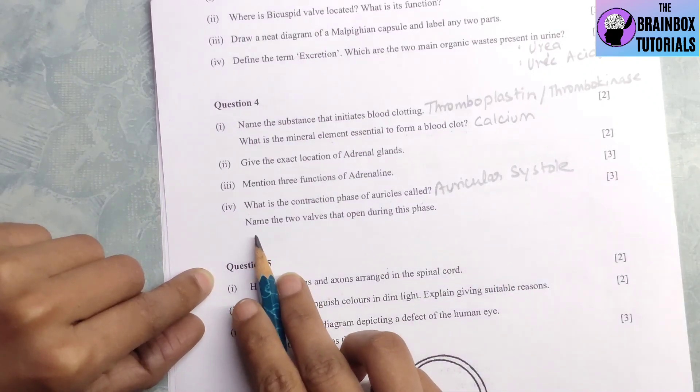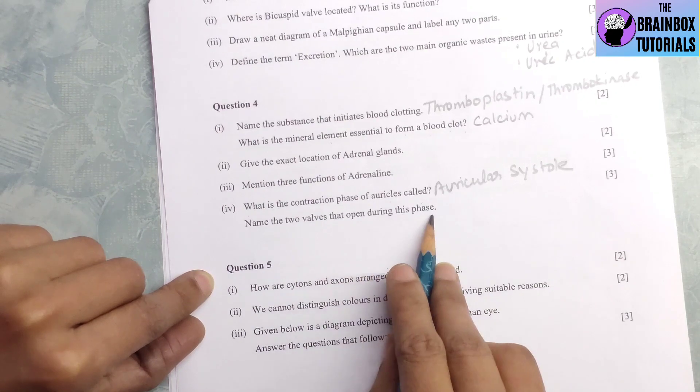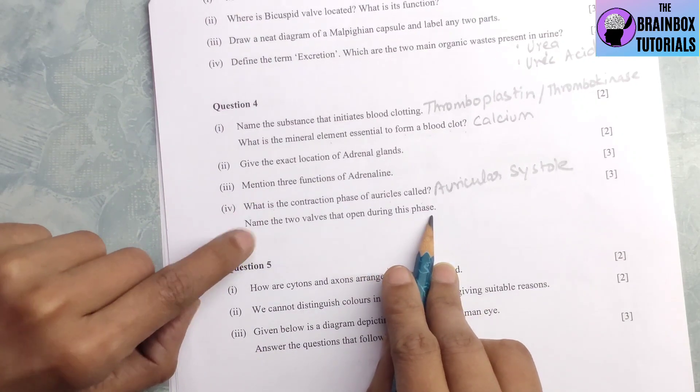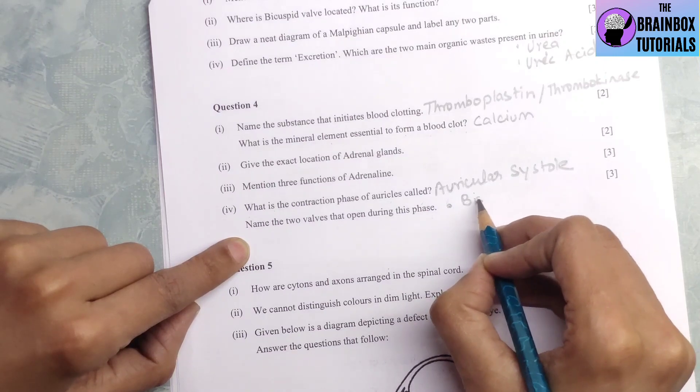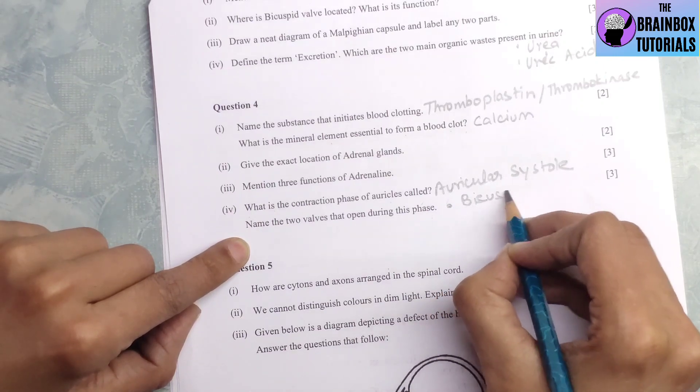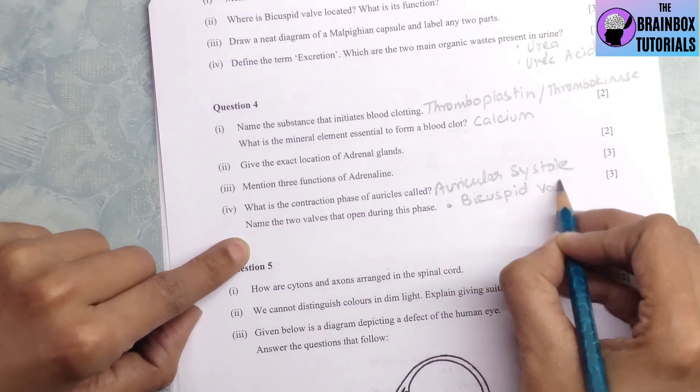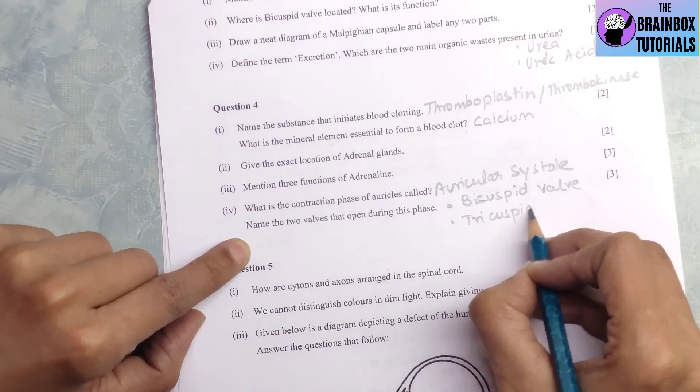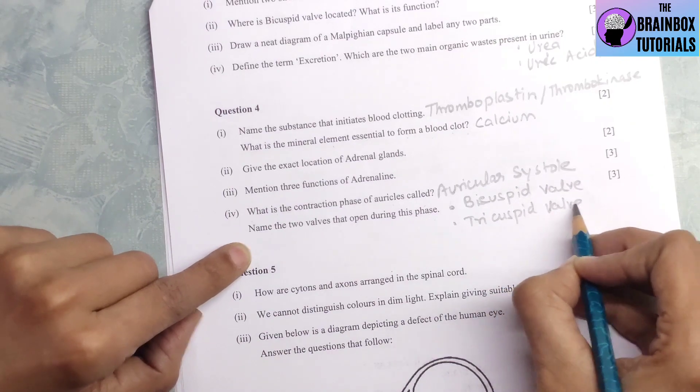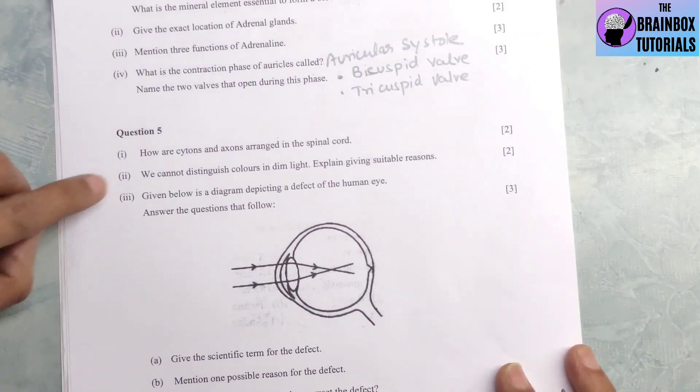Question number 4, what is the contraction phase of auricles called? Contraction phase is auricular systole. Next part, name the two valves that open during this phase. During auricular systole, one valve which opens is bicuspid valve and second one is tricuspid valve.